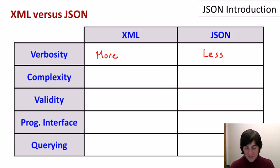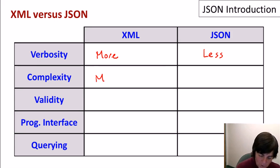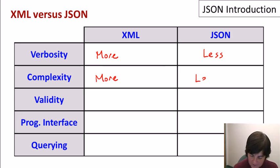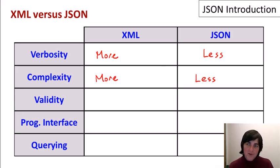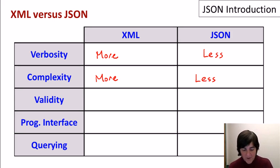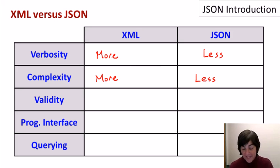Second is complexity. Most people would say that XML is a bit more complex than JSON. I'm not sure I entirely agree with that comparison. If you look at the subset of XML that people really use, you've got attributes, sub-elements, and text, and that's more or less it.